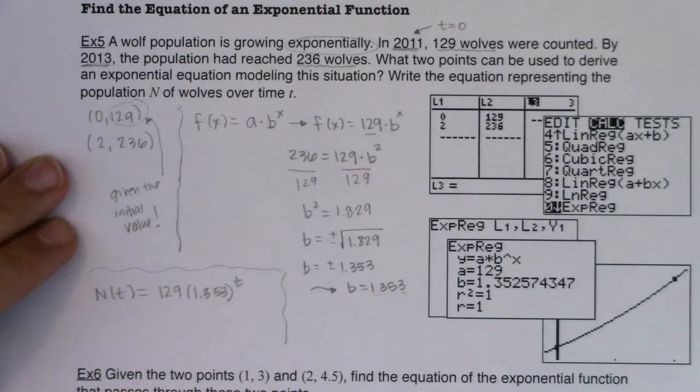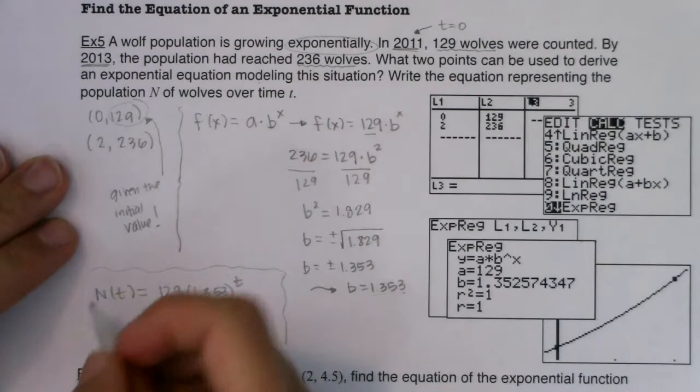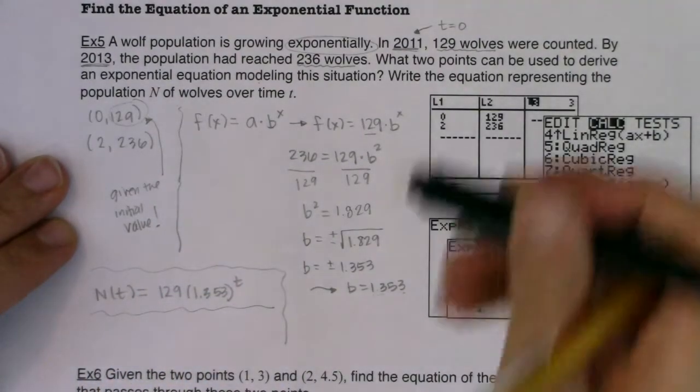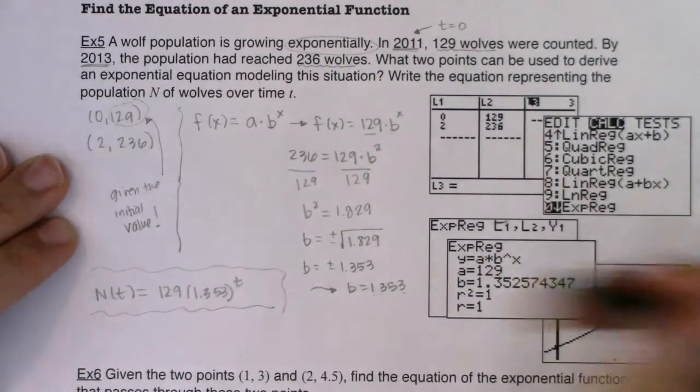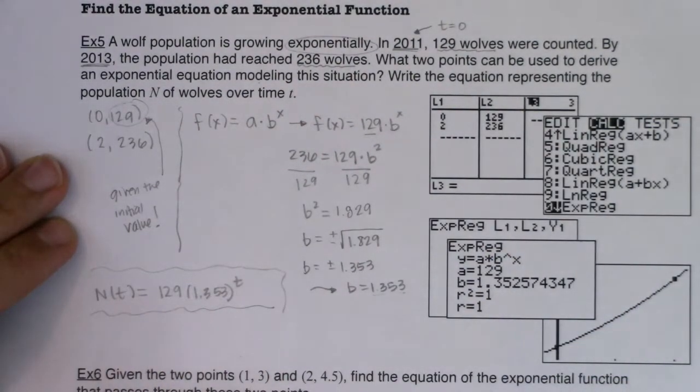So as I start to work through this, I know my base. There's my base. There's my initial value of 129. So let me go write up this exponential model. I'm going to say n(t) is equal to 129 times 1.353 raised to the t power. So there is my exponential model. That is my answer to the second question. What two ordered pairs can I use? I had them there. What was my exponential model? Right there.